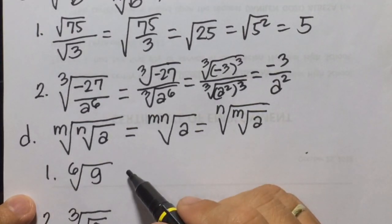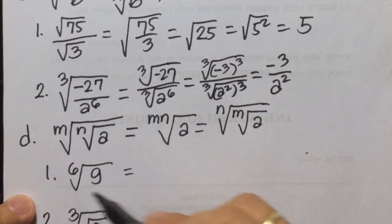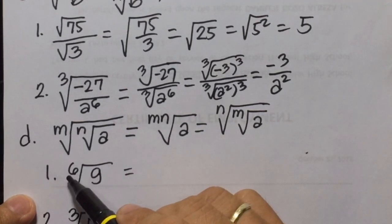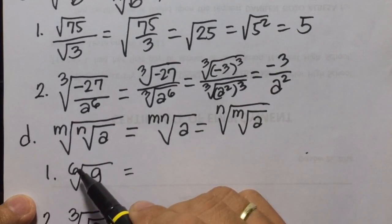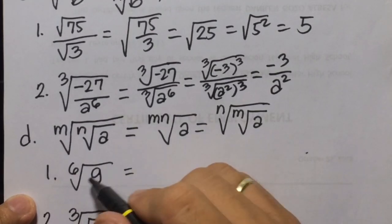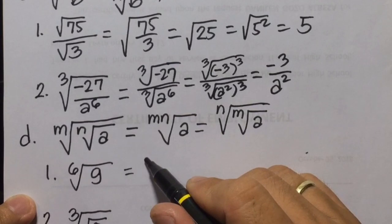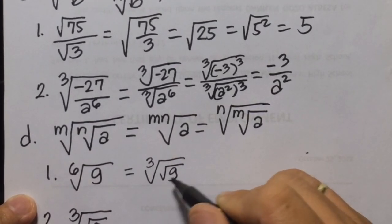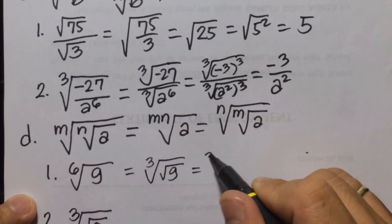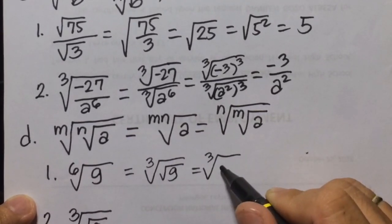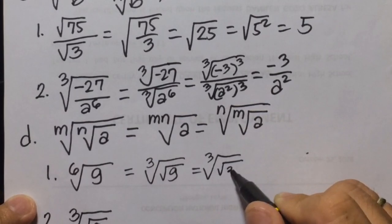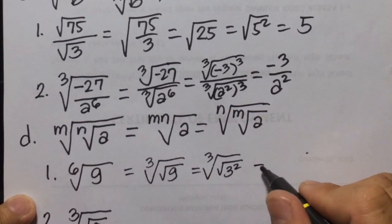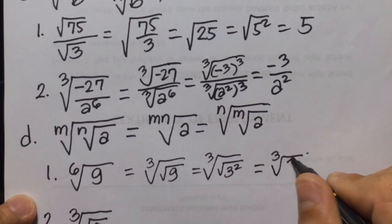Example number 1: 6th root of 9. Since 9 is a perfect square, you can express 6 as 3 times 2. So we write this as cube root of the square root of 9, which is cube root of the square root of 3 squared. Square root of 3 squared is 3, so the answer is cube root of 3.